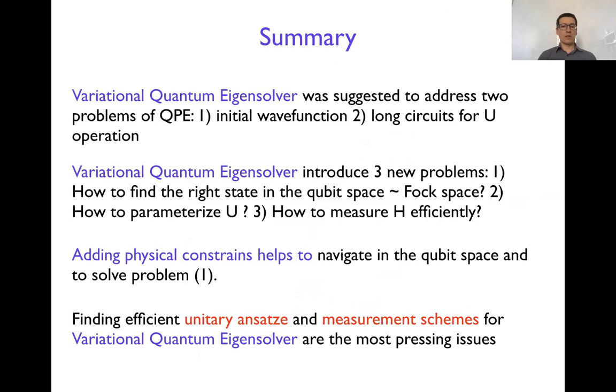With that, I would like to summarize that variational quantum eigensolver was suggested to address two problems of quantum phase estimation, its initial wave function preparation and also long circuits for unitary transformation needed in the quantum phase estimation. But variational quantum eigensolver introduces three new problems. First is how to find the right state in the qubit space, which is essentially equivalent to the Fock space of the original problem. Two, how to parameterize the unitary transformation and how to measure Hamiltonian efficiently.